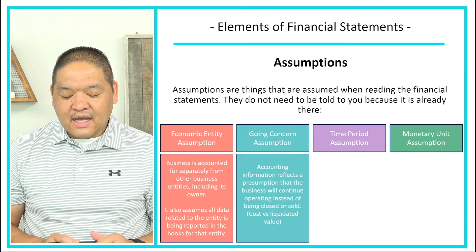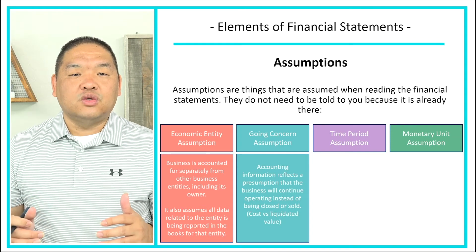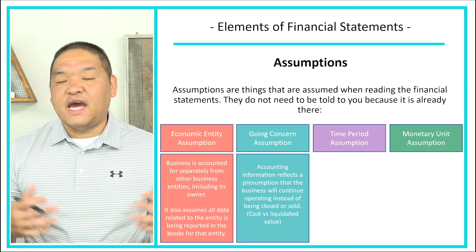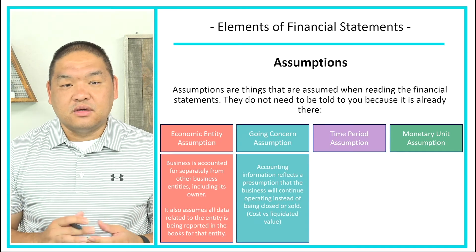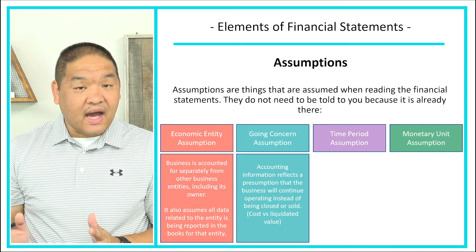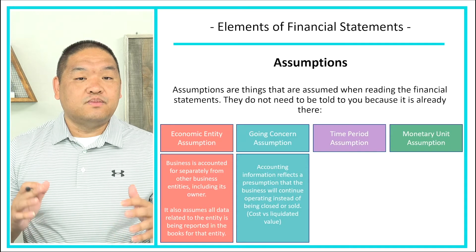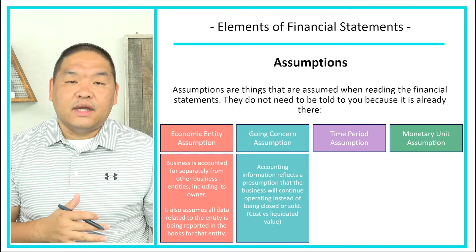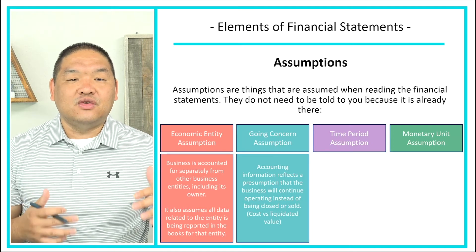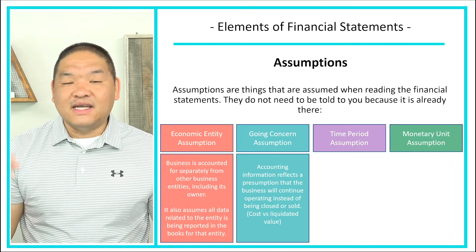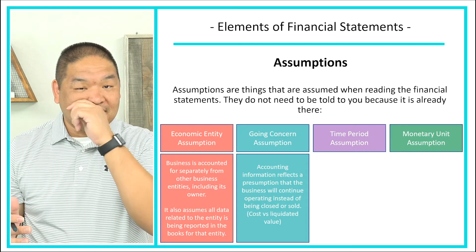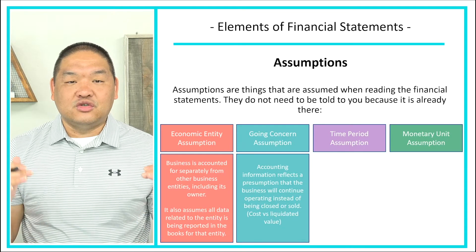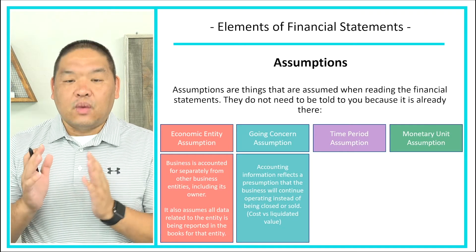The going concern assumption means that accounting information reflects a presumption that the business will continue operating instead of being closed or sold. For instance, when you buy a new car and depreciate it over 10 years — maybe a thousand dollars a year — if you try to trade it in or sell it, it's usually worth way less than your book value. The assumption is that we're going to continue using that asset for a long time, so we book it at cost rather than fair value.